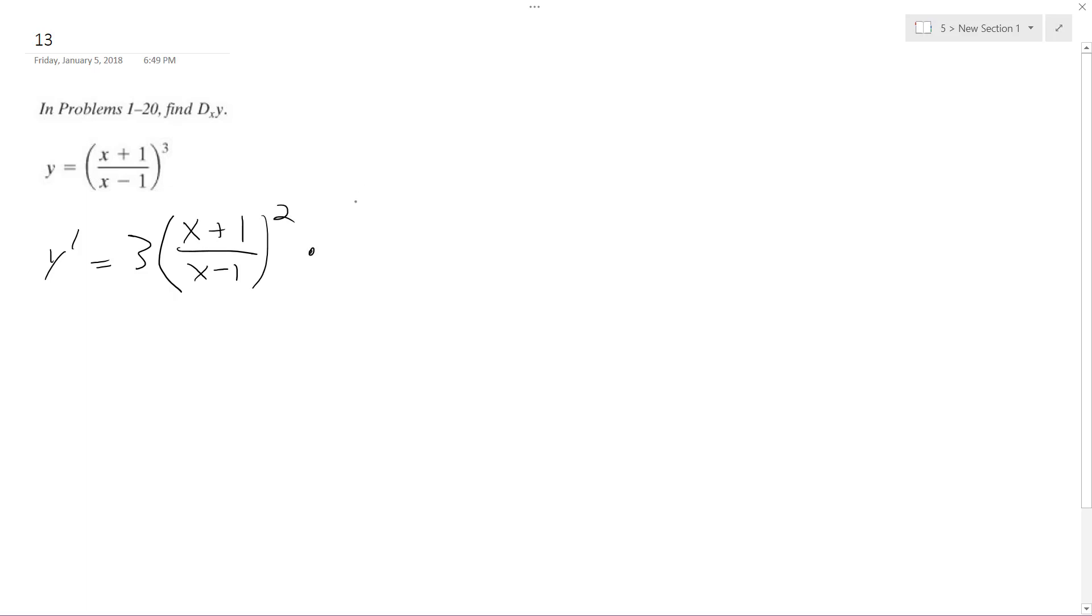But then what I'm going to do is I've got to use the quotient rule, so that becomes x plus 1 prime times x minus 1 minus x minus 1 prime times x plus 1 all over x minus 1 squared.